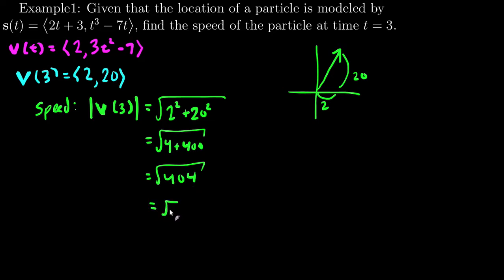This factors as 4 times 101. There are no perfect square factors of 101, but square root of 4 is 2, so I get 2 root 101. And if I wanted a decimal, I could put that into a calculator. So that is the speed, it is a scalar value, not a vector for speed.